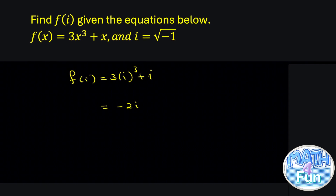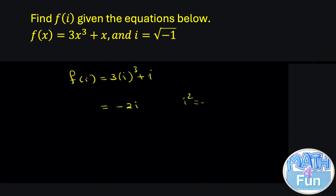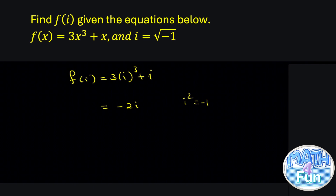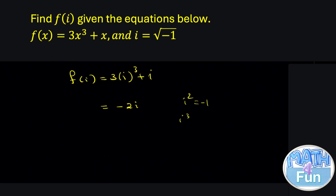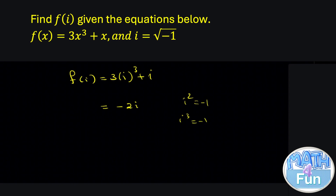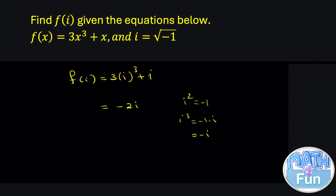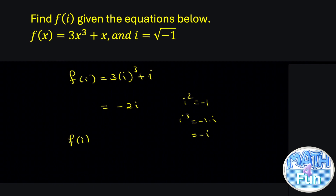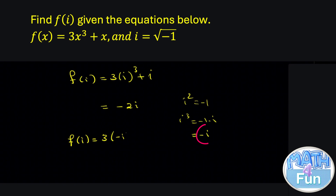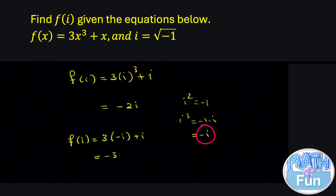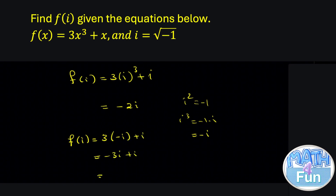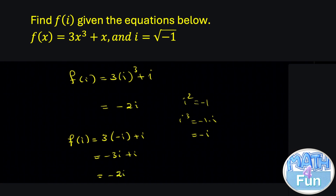If you want to solve it manually, you know that every i² = −1. And to get i³, multiply i² by i: i³ = −1 times i = −i. So f(i) = 3 · i³ + i = 3 · (−i) + i = −3i + i, which equals −2i.